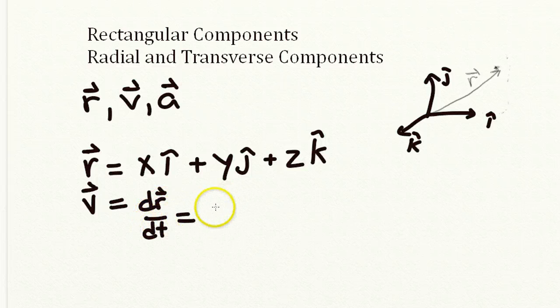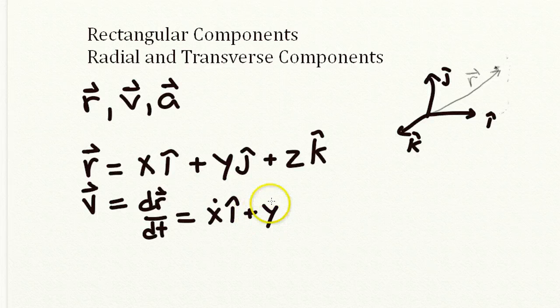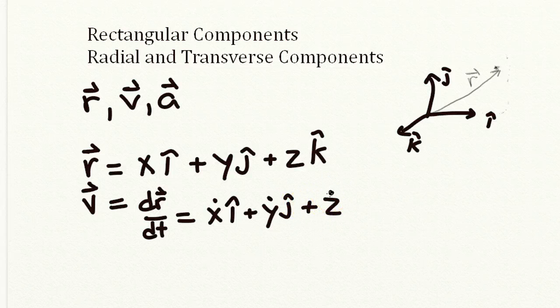It'll just be the time derivative of x. Remember we use this notation, a dot above the x to indicate the time derivative of x, this kind of shorthand notation, in the i-hat direction, plus the time derivative of y in the j-hat direction, plus the time derivative of z in the k-hat direction.